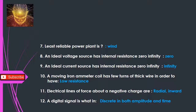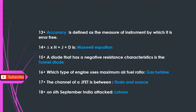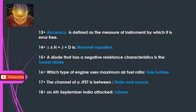Q11: Electrical lines of force about a negative charge are — radial, inward. Q12: A digital signal is — discrete in both amplitude and time. Q13: Accuracy is defined as the measure of an instrument by which it is error free. Q14: ∇×H = J + ∂D/∂t is — Maxwell's equation. Q15: A diode that has a negative resistance characteristic is the — tunnel diode.